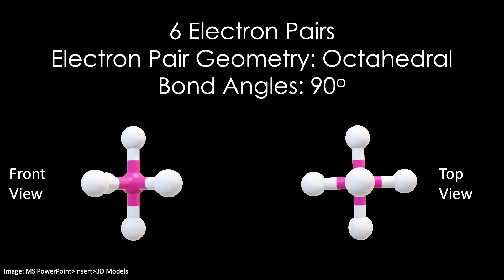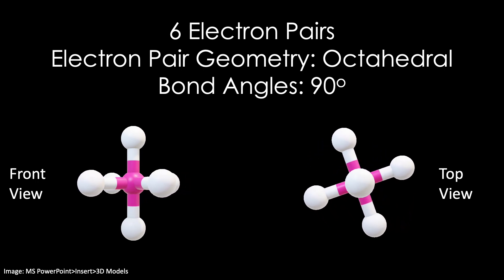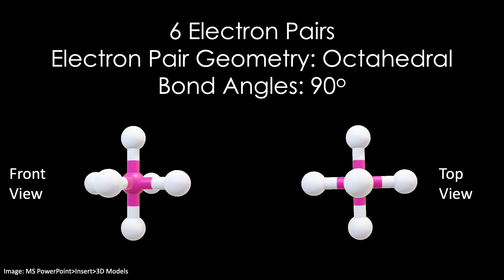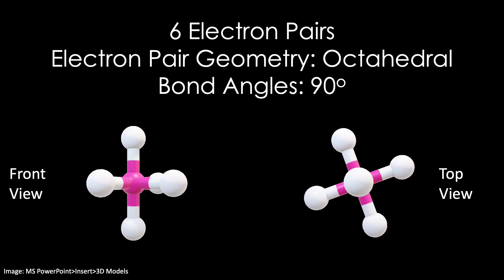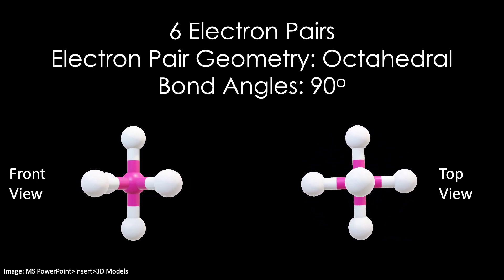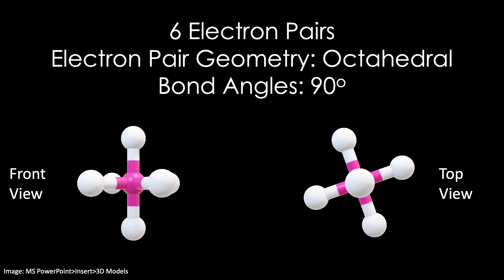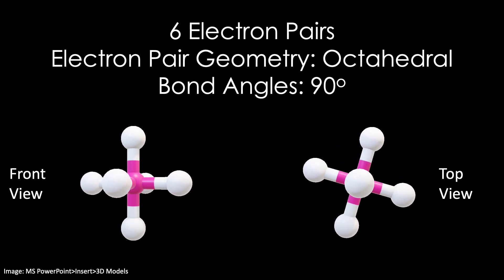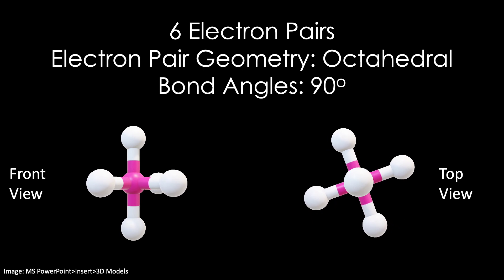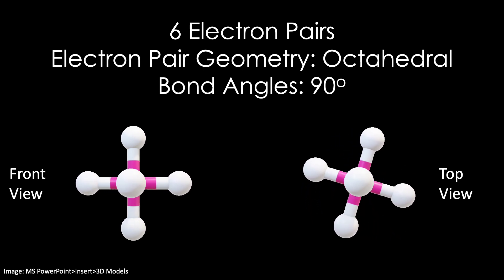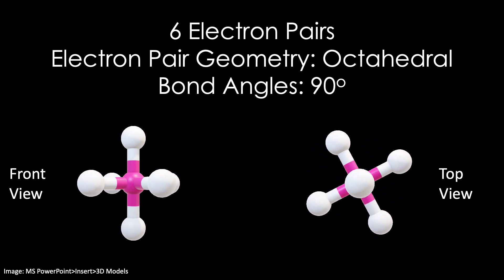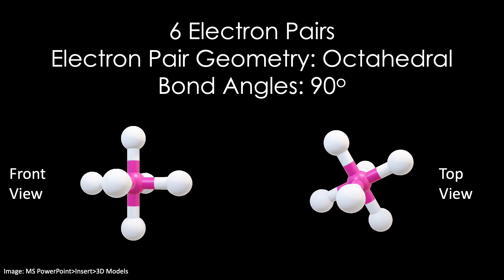Finally, for six electron pairs, the optimum electron pair geometry is octahedral, with bond angles of 90 degrees. You can see the front view and the top view are essentially identical. Also note, in the top view on the right, the front atom is hiding the atom in the back. You can see this when I change the rotation here.